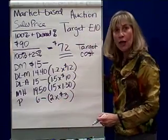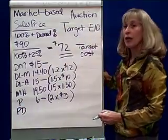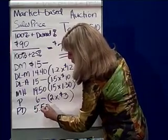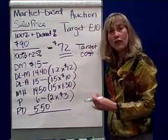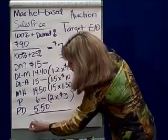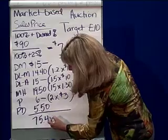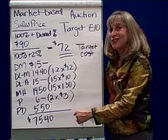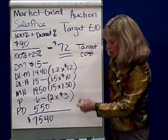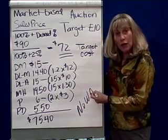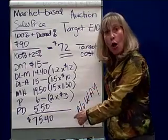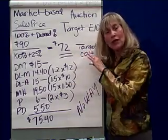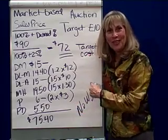Finally, we have product delivery costs of $5.50 per unit. Totaling everything up, the cost of making a fireplace screen is $75.40. We compare that $75.40 to the target cost of $72 — and since our cost exceeds the target, we say no way. We wouldn't make the desired profit, so it is not time to go to market yet with this fireplace screen.